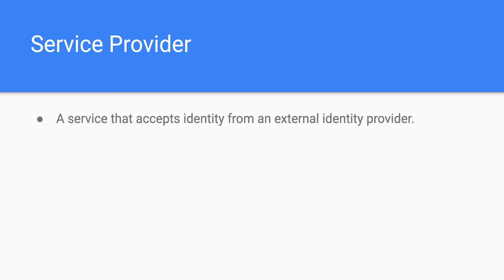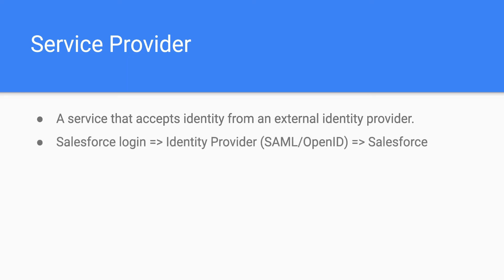A common example in enterprise scenarios is where your company has a corporate login and you don't want Salesforce users to enter their credentials separately. Instead, they can log in using single sign-on directly into your Salesforce instance using their company credentials. When you go to the Salesforce login screen, you will be redirected to the identity provider screen, which will either prompt you for a username and password if you are not logged in, or if already logged in, use SAML or OpenID protocol to log you directly into Salesforce.